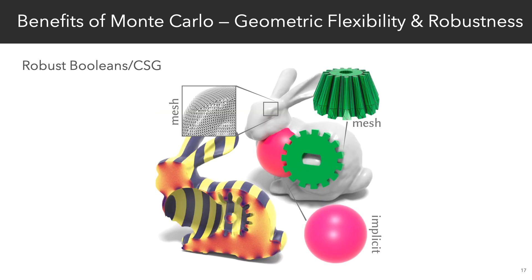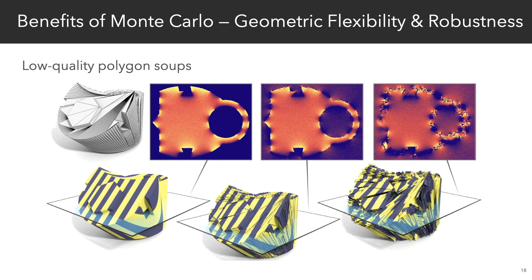We can also do robust Booleans between different geometric representations, and work directly with low quality geometry. And just like Monte Carlo rendering, the quality of the solution here degrades gracefully with the quality of the input domain.